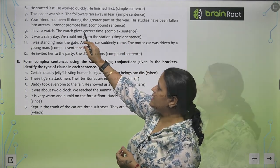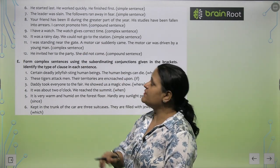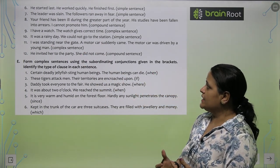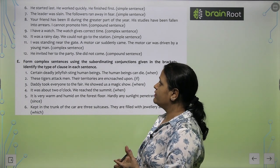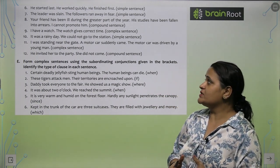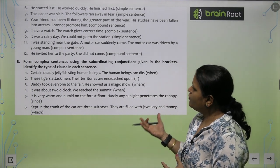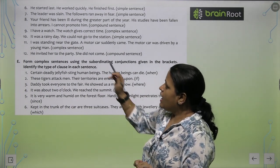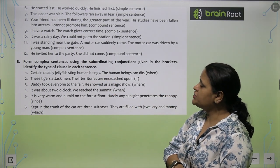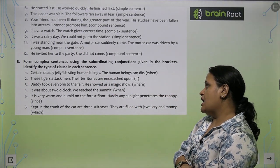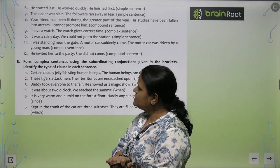'The leader was slain.' Combined (complex): 'When the leader was slain, the followers ran away in fear.' Or: 'Because the leader was slain, the followers ran away in fear.' 'I have a watch. The watch gives correct time.' Combined: 'I have a watch which gives correct time.'